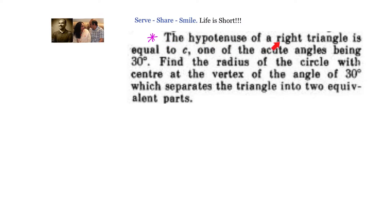The hypotenuse of a right triangle is equal to C, with one of the acute angles being 30 degrees. Find the radius of the circle with center at the vertex of the angle of 30 degrees, which separates the triangle into two equivalent parts.